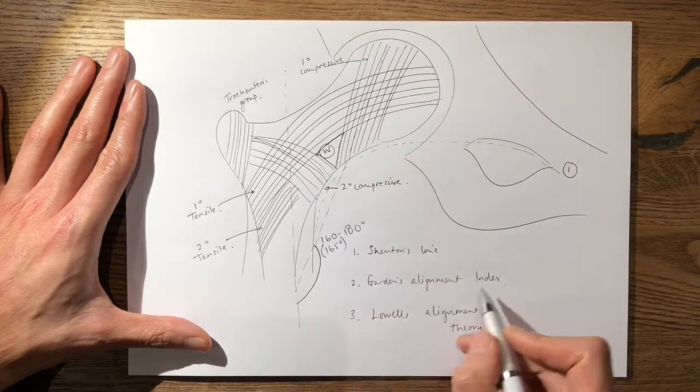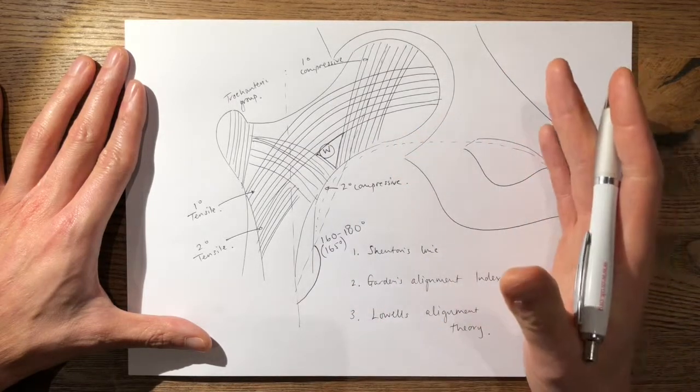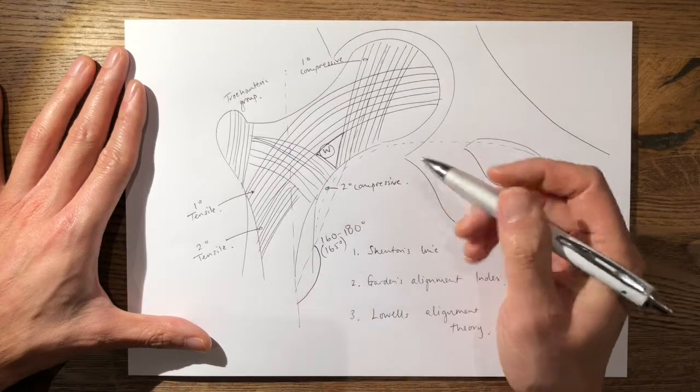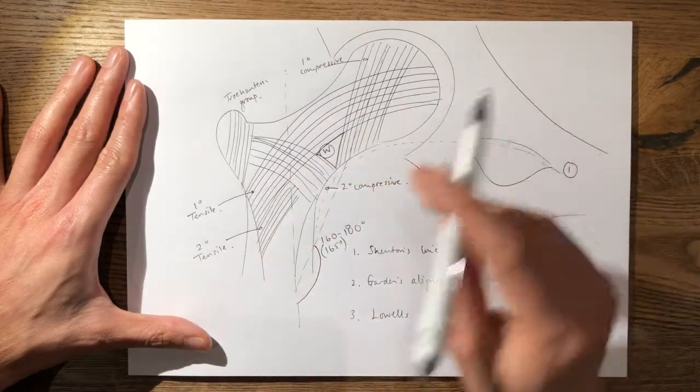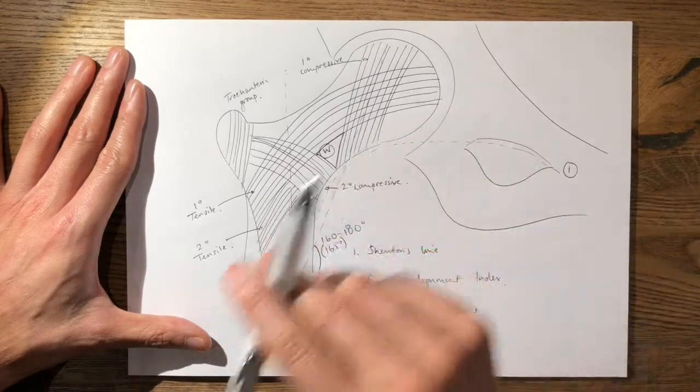You can also use Garden's alignment index on the lateral view where the trabecular patterning should line up exactly, so at 180 degrees. It should form a straight line.